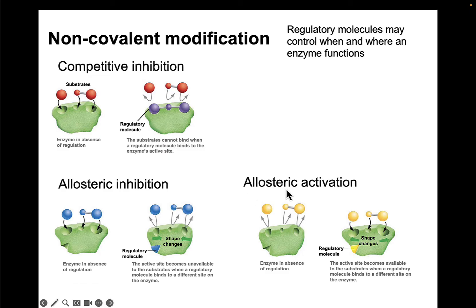Allosteric interactions can also activate an enzyme. Here we have an enzyme where substrates can't yet bind to the active site due to the enzyme's shape. But when the regulatory molecule binds at a place other than the active site, it changes the shape, and then the reactants are able to bind. So allosteric interactions can cause either inhibition or activation.